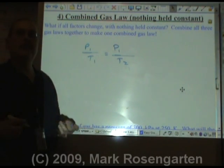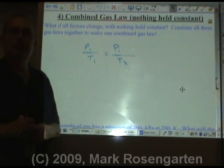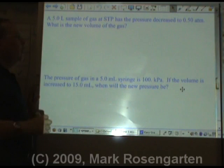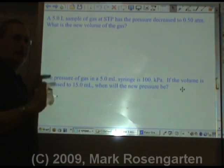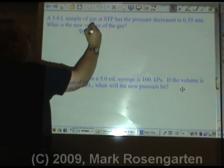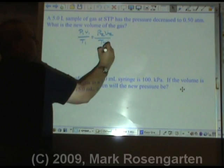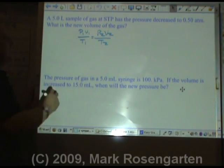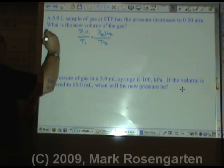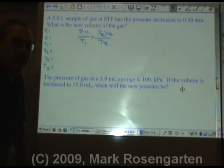So you can use the combined gas law to get any of the other three, and then you can solve problems, which is what we're going to do next. Whenever you're faced with a gas law problem, the first thing you should do is write down the equation: P1V1 over T1 equals P2V2 over T2, and then create a little data table on the side. Let's go through the problem.